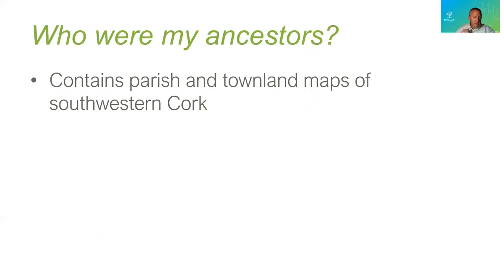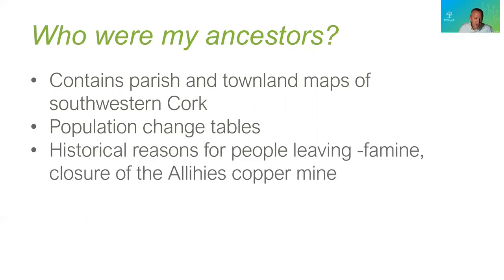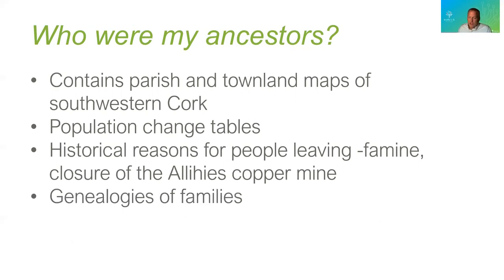There was another book called 'Who Were My Ancestors?' — actually two or three books containing parish and townland maps of Southwestern Cork with population tables, historical reasons for why people left such as famine and closure of the copper mine, and published family genealogies. It was really a dream for somebody with ancestry from that area. The point of cluster migration, then, is to study the history on the United States side where your ancestor arrived and settled, as well as the people they were associated with, because in doing so you may gain the clues needed to locate a place in Ireland.